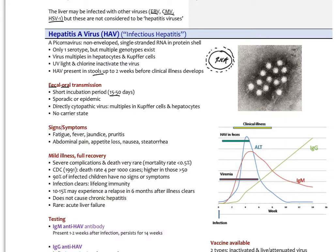This is a direct cytopathic virus. It multiplies in the Kupfer cells and hepatocytes and destroys them. The good thing is there's no carrier state. With hepatitis B, you can become infected, the immune system takes care of the active infection, but then you become a carrier and spread it. That's not the case with hep A. Once your immune system clears it, you actually have immunity.